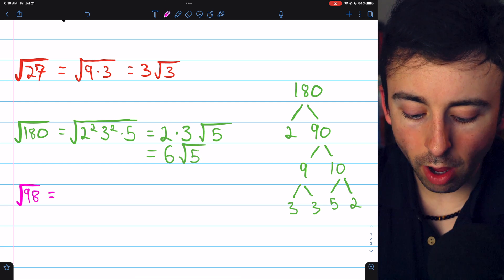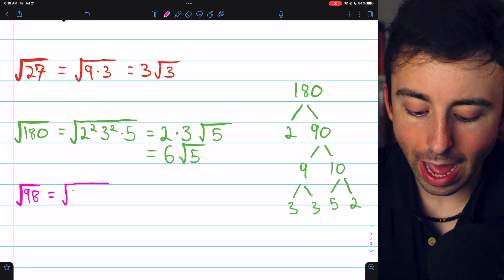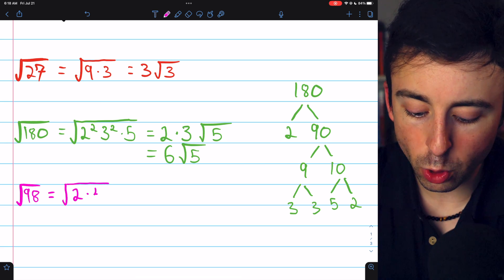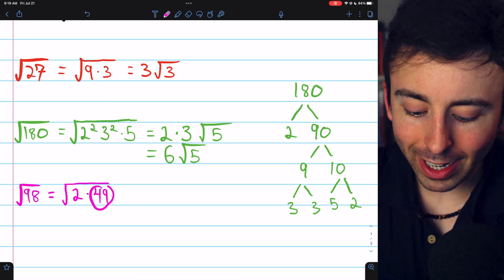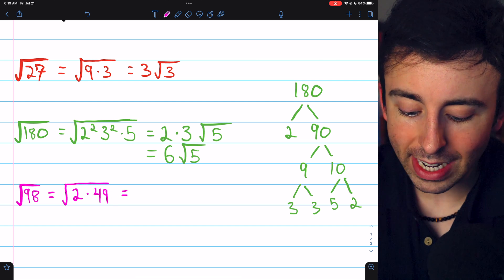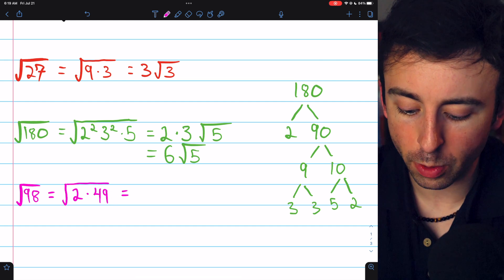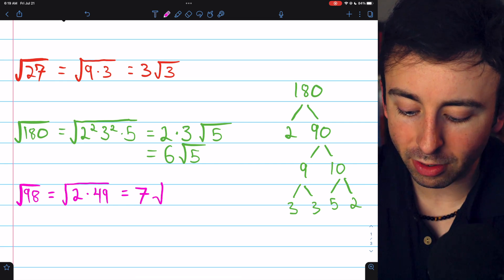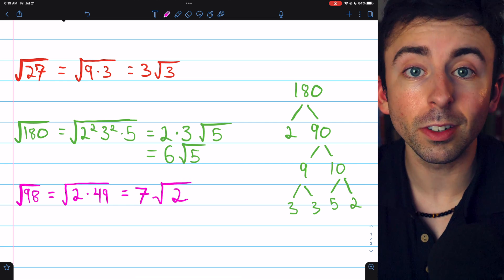98 is also an even number, so we know we can take a 2 out of it. 98 equals 2 times 49, and I recognize 49 as 7 squared. Thus, we can take the 49 out of the square root. The square root of 49 is 7, so this just leaves 7 root 2.